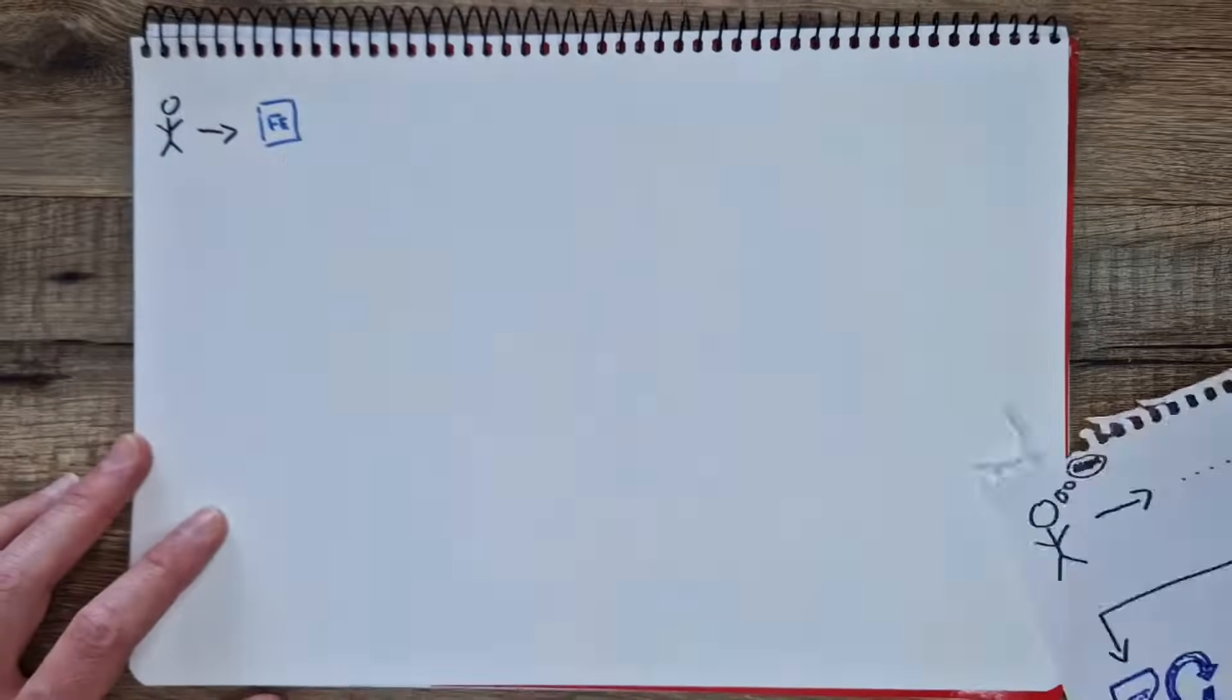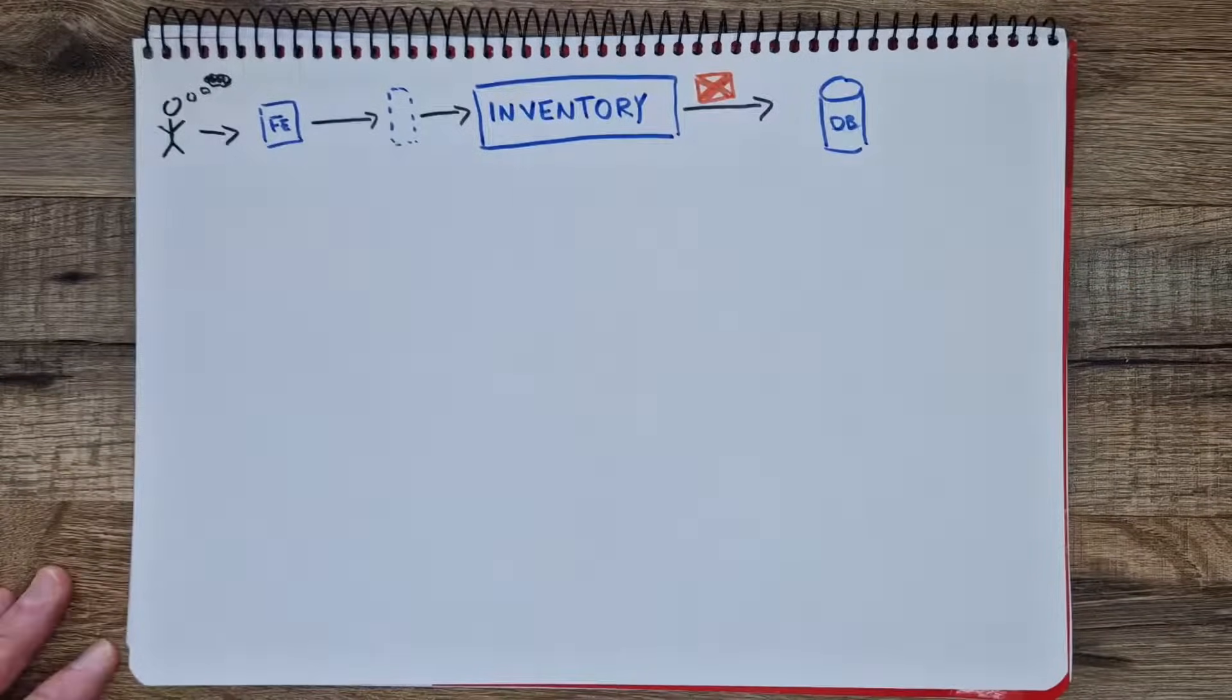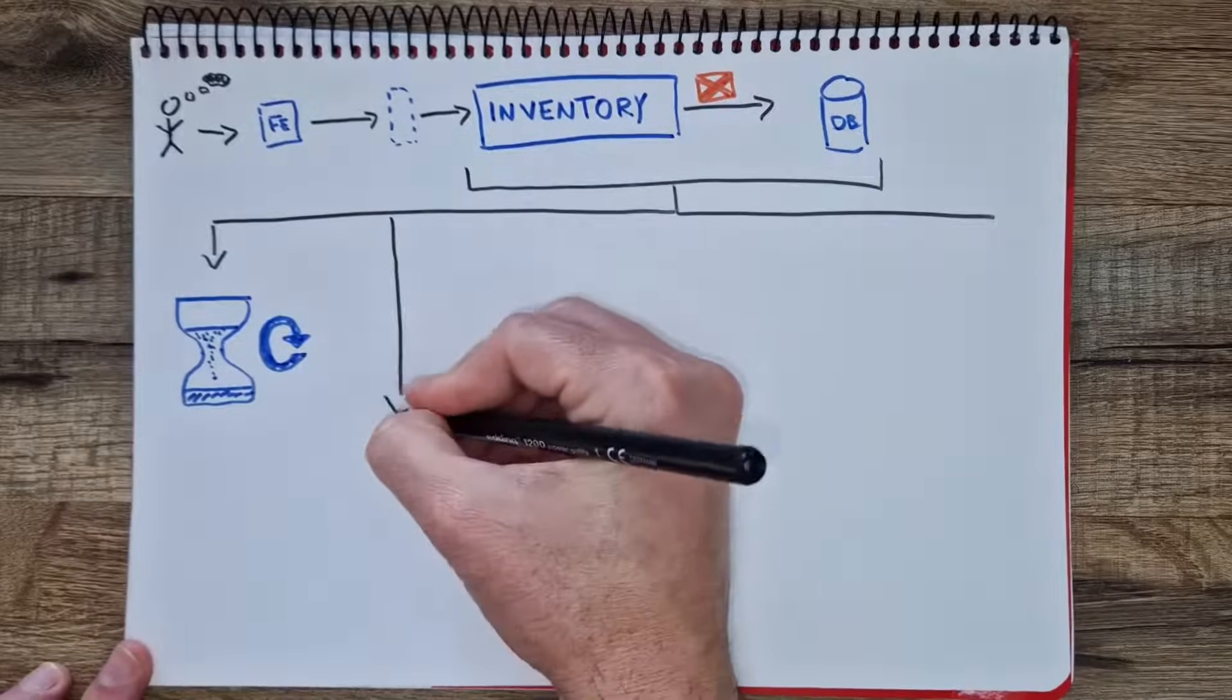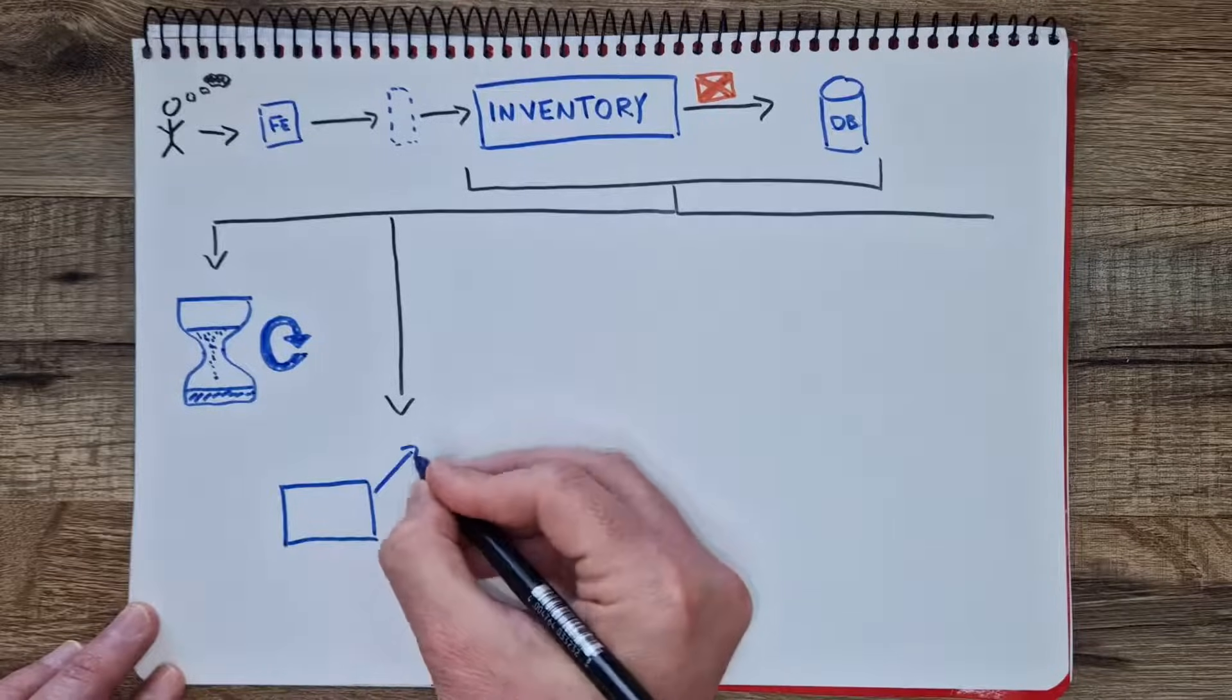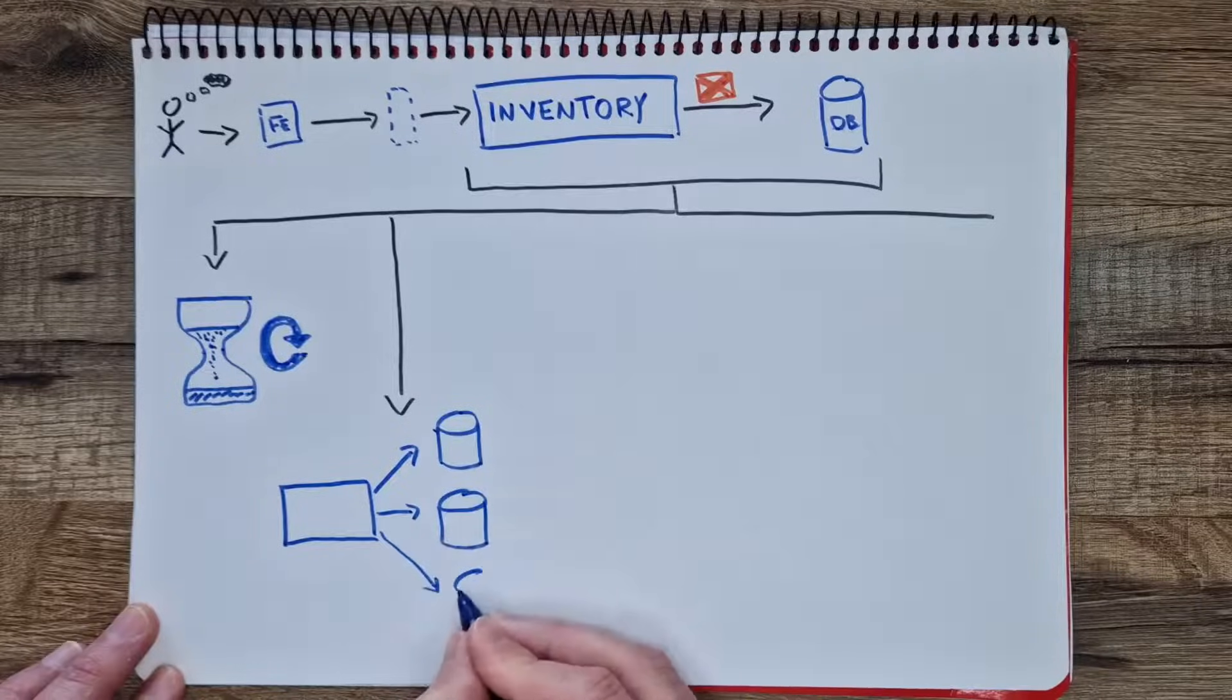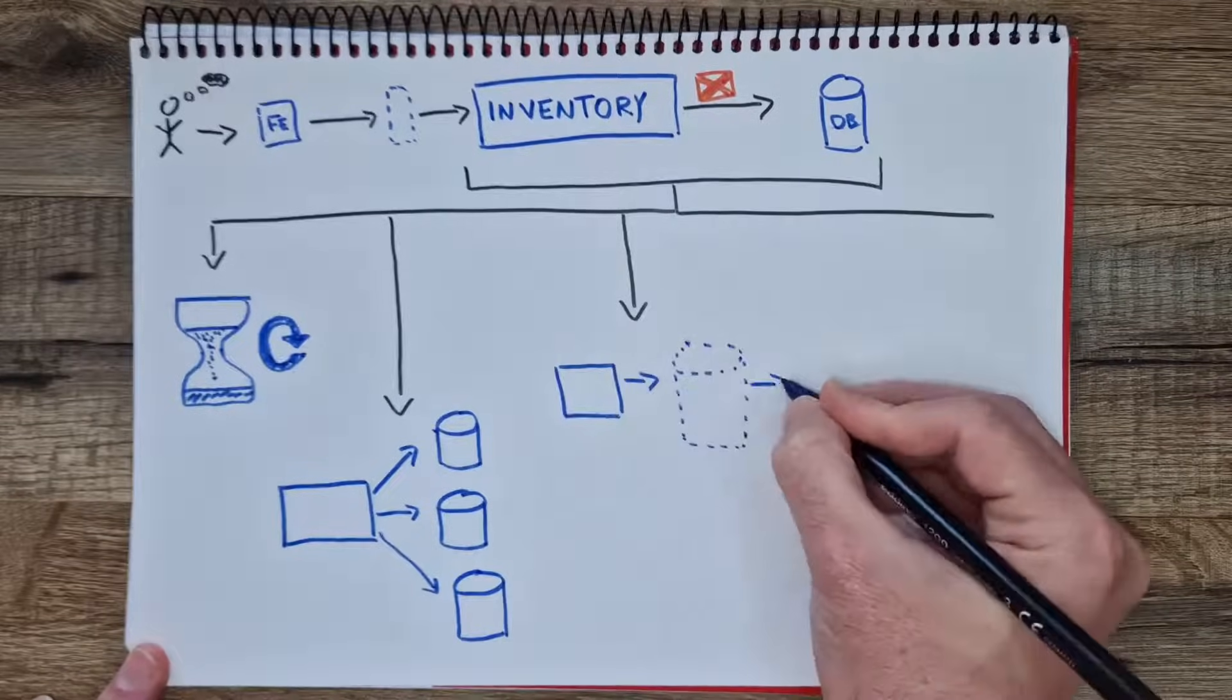Getting back to the example, the user might wait forever for the page to load or receive an error that the service couldn't connect to the database. To prevent users from noticing these failures, we could add timeouts and automatic retries or add replication. For example, if we have multiple instances of the same database, we might be able to switch to another instance if one is failing or connectivity to it is failing. It can also help with load balancing in case there is too much traffic. We could also add a cache, so the user would get an outdated result instead of an error.